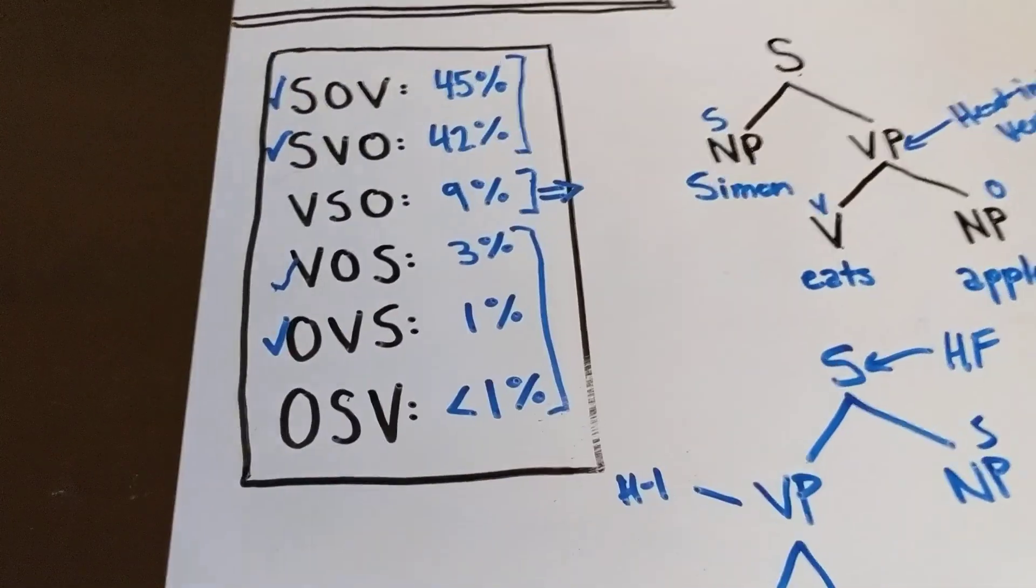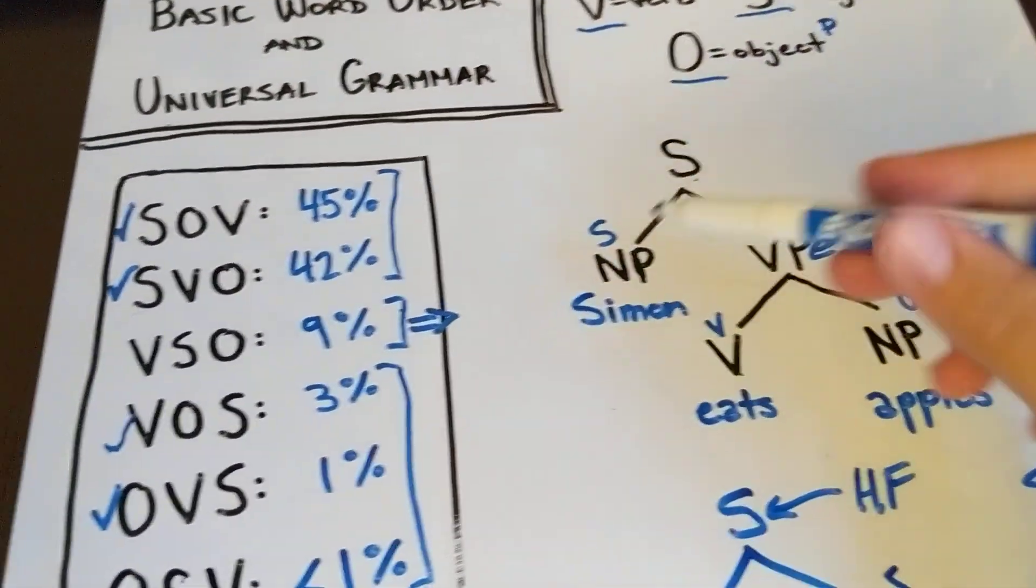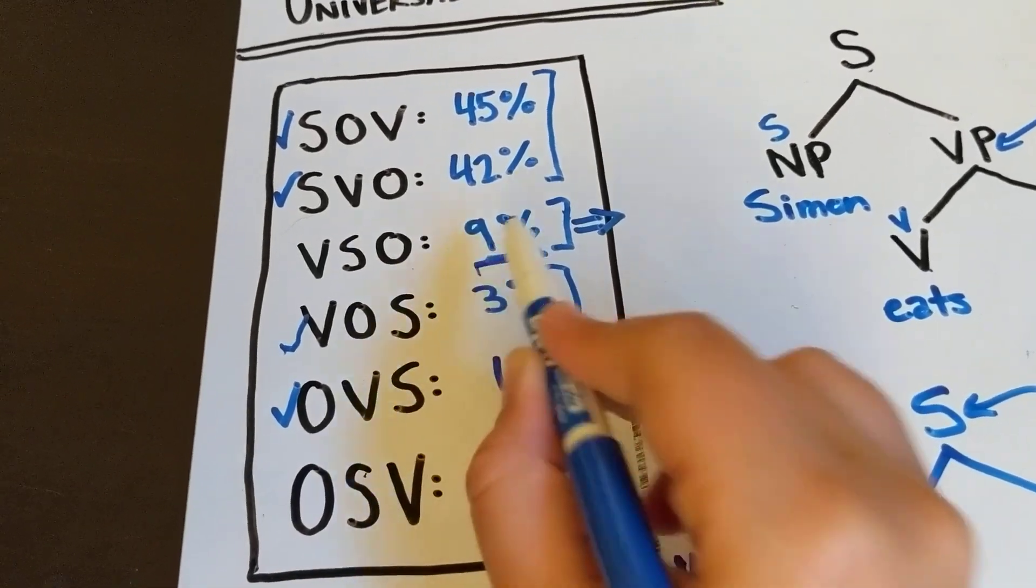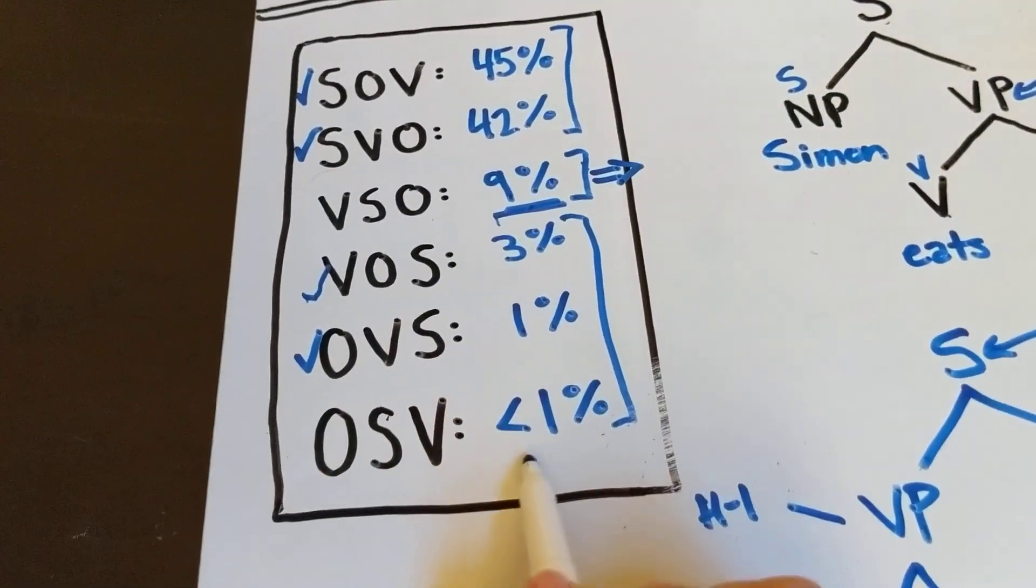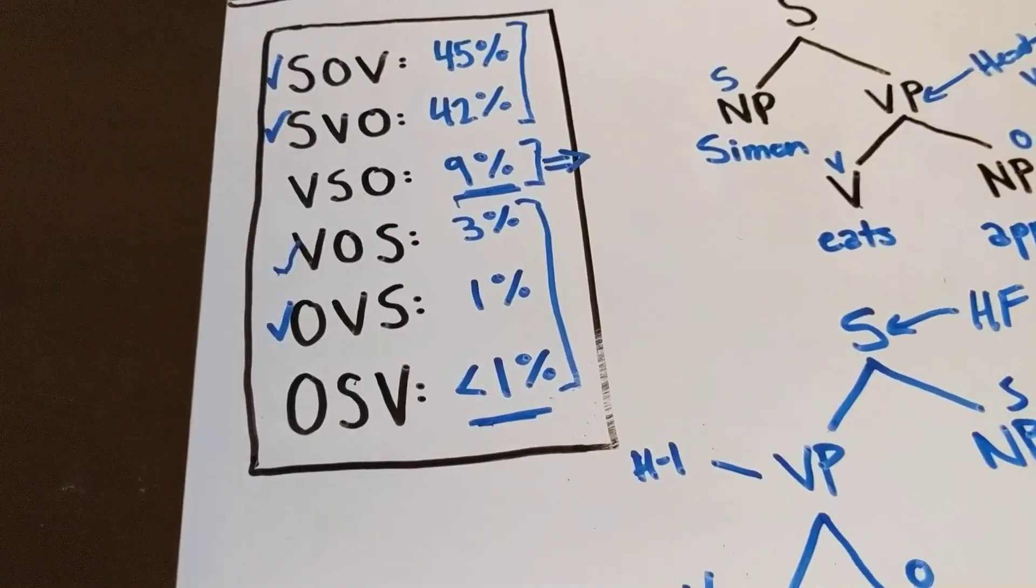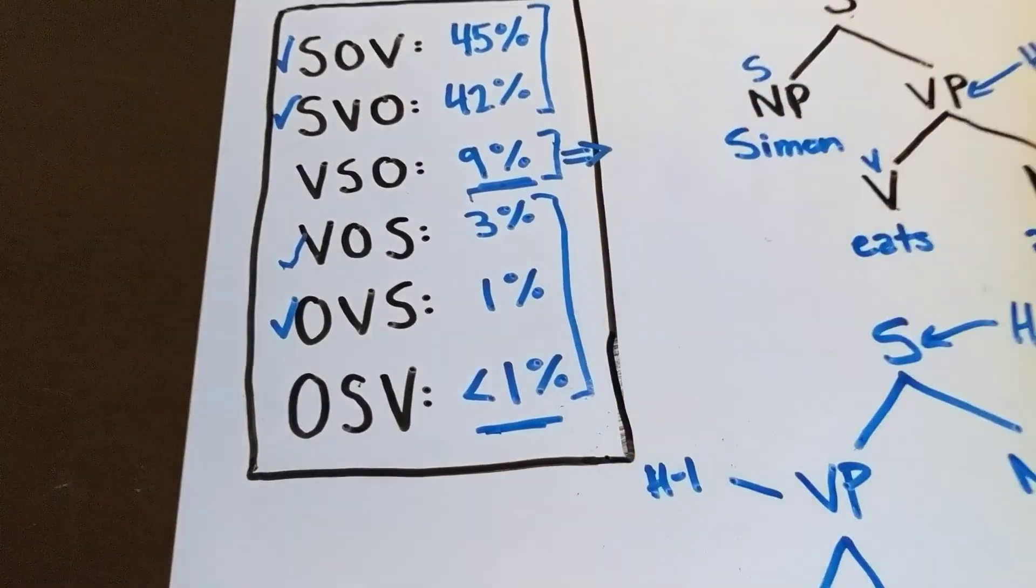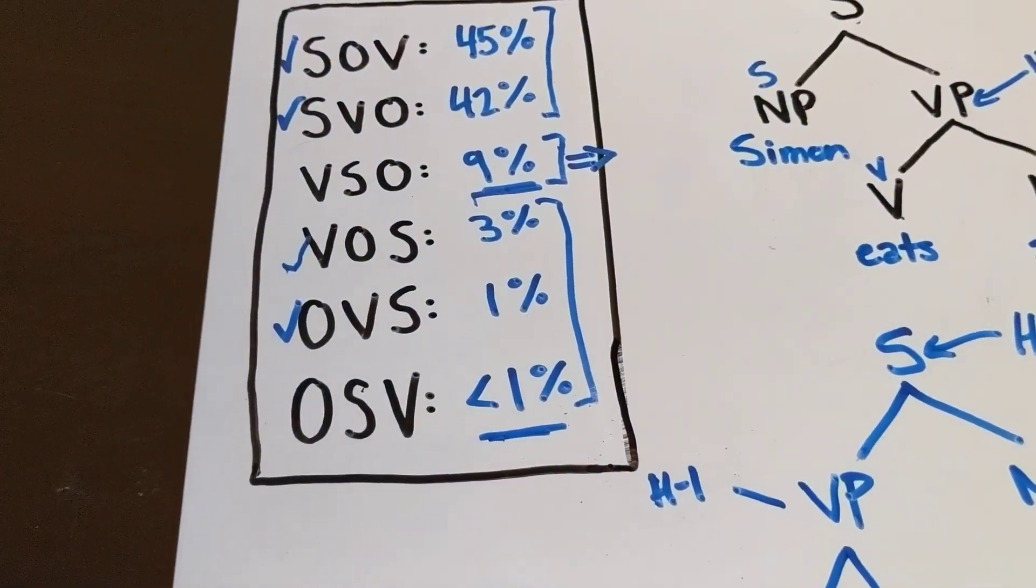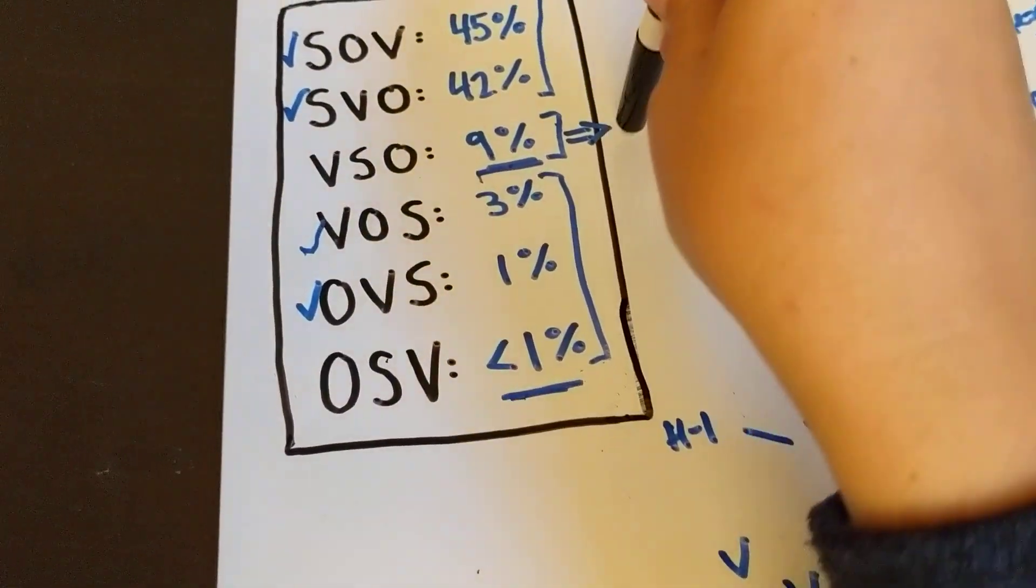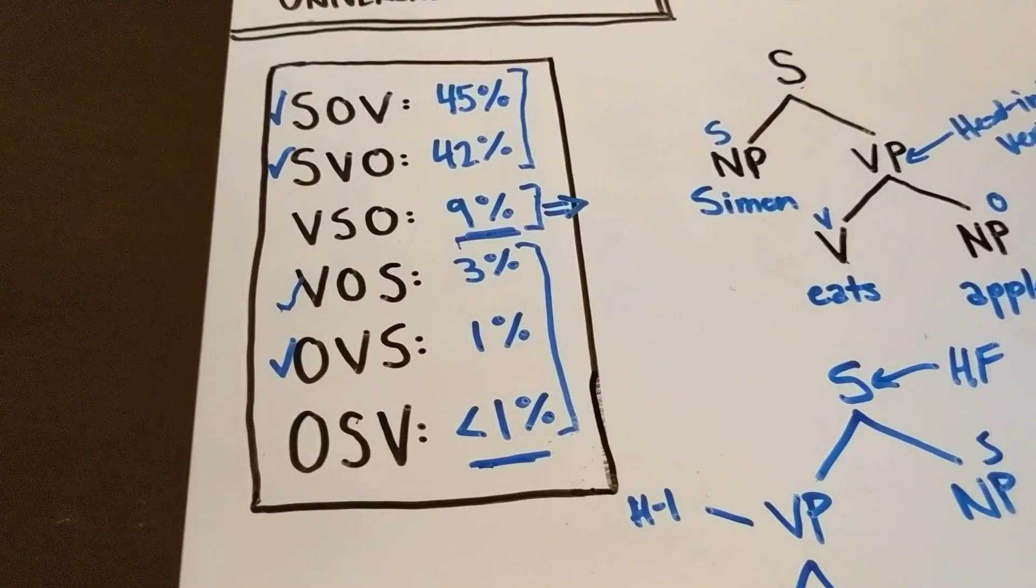So the two that we have not accounted for in this method and cannot account for simply using this kind of tree structure are the VSO, which we really need to account for because 9% of languages is not nothing, and the OSV, which is very small, and that could even just be individual linguists' errors in understanding how a language really works and what the basic word order is. So this is such an uncommon word order that you almost don't need a good explanation for it, because it really is just a couple of languages. But we are going to provide in the next video an explanation for VSO word order, so get excited. It's going to be much more syntax.